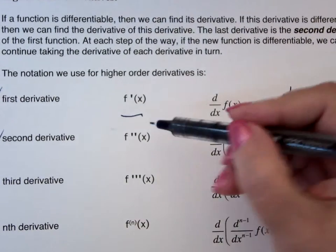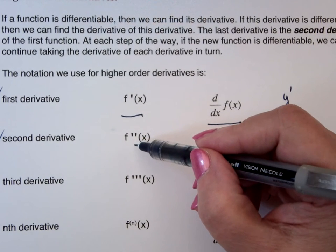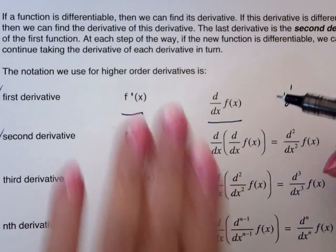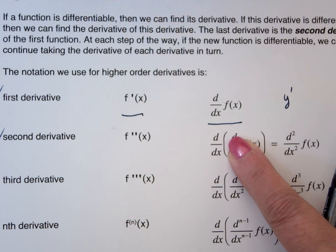Second derivative should make sense. It's f double prime. It says you're going to take the derivative twice. That says you're going to take the derivative, and you're going to take the derivative of the derivative.